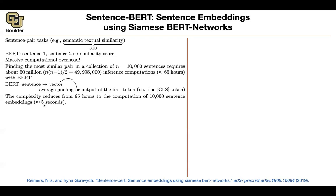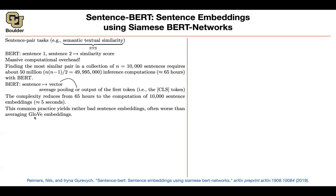Beautiful idea. You implement it, but it's not going to give you the result you want, because usually the vectors coming out of a BERT model are bad sentence embeddings. They are not good at distinguishing one sentence from another. BERT is trained to predict masked tokens — what token did I mask within a sentence — it's not good at comparing sentences. It's even worse than averaging the GloVe embeddings. You can take your sentence, look at the GloVe embeddings for each token, average them up, which is just a bag of words, and that gives you better results.